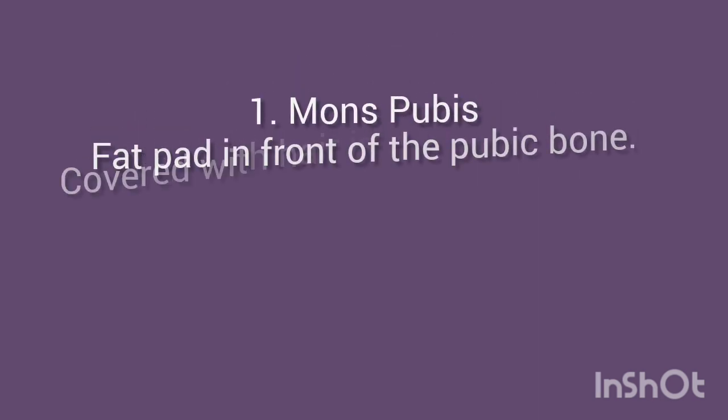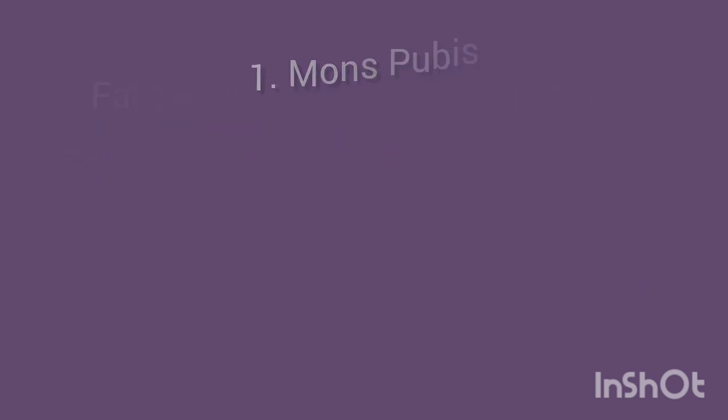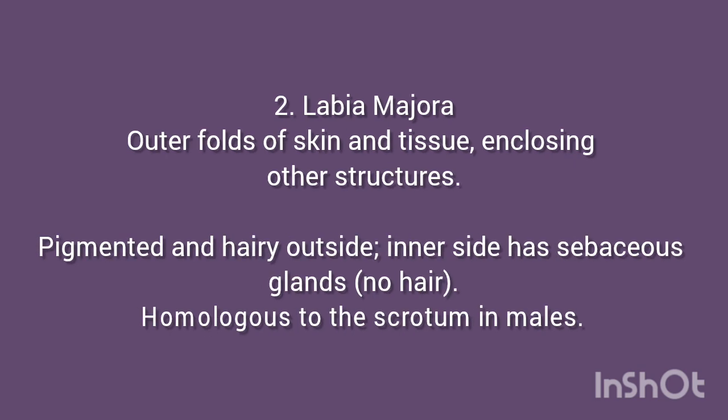1. Mons pubis: A fat pad in front of the pubic bone, covered with hair in adults forming a triangular pattern. 2. Labia Majora: Outer folds of skin and tissue enclosing other structures. Pigmented and hairy on the outside; the inner side has sebaceous glands but no hair. Homologous to the scrotum in males.